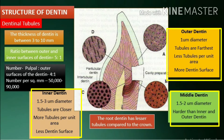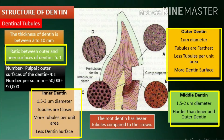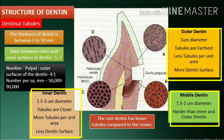The diameter of the dentinal tubules is larger at the pulpal side — 1.5 to 3 microns — than at the dentino-enamel junction, which is 1 micron. The number of tubules per unit area at the pulpal end is nearly 4 to 5 times more than at the outer surface of the dentin. The ratio between the outer and inner surfaces of dentin is on average 5:1, so the tubules are farther apart in the outer layers and closer together near the pulp. Pulpal surface: 50,000 per square mm; outer surface: 90,000 per square mm.